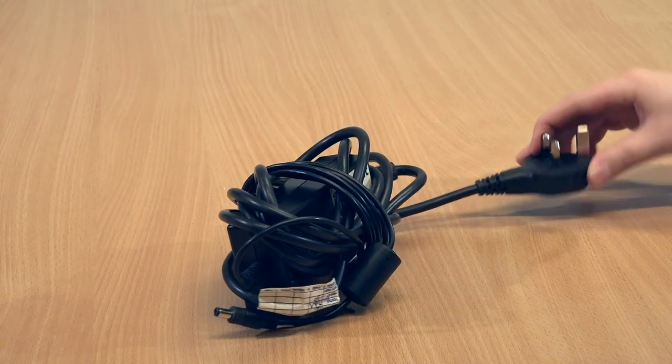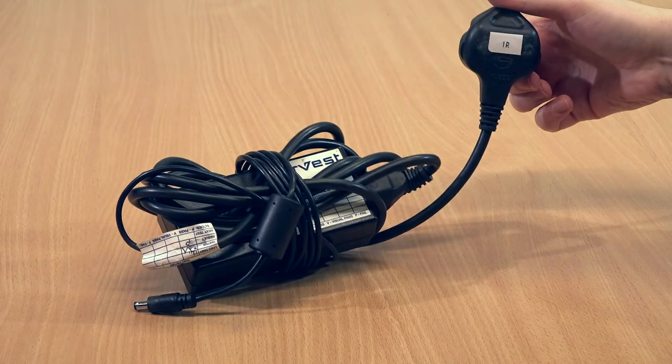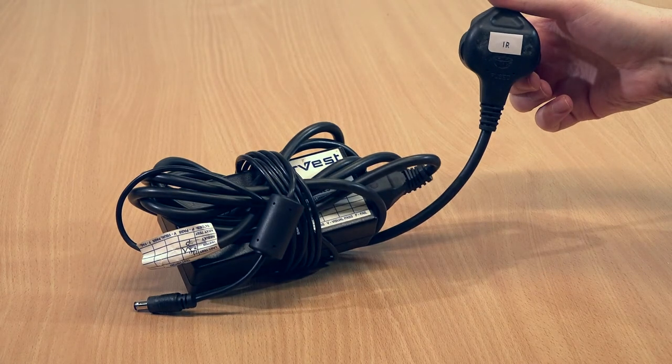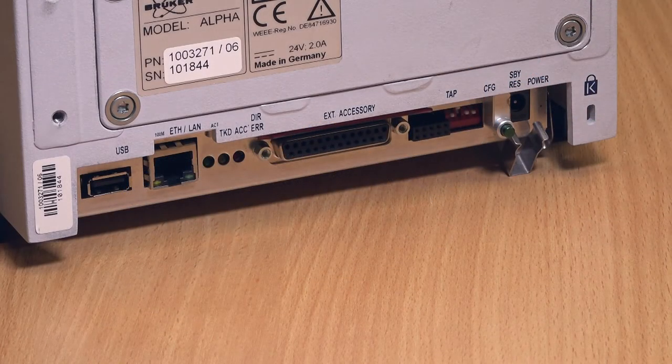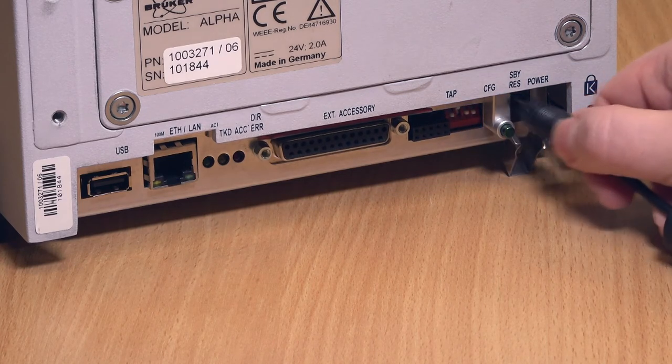The power supplies have the same connecting plugs but different voltages, so it is vital that you use the correct power supply for the unit. Here you can see the labeled supply for the IR spectrometer. Plug the supply into the rear of the spectrometer, making sure to attach it with the clip as shown.